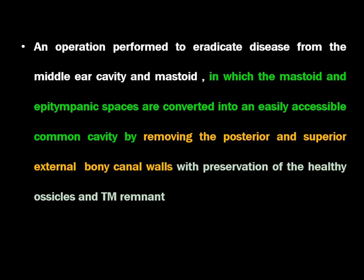Modified radical mastoidectomy, or MRM, is defined as an operation performed to eradicate disease from the middle ear cavity and mastoid, in which the mastoid and epitympanic space are converted into an easily accessible common cavity by removing the posterior and superior bony canal walls, with preservation of healthy ossicles and tympanic membrane remnant. This is modified radical mastoidectomy — one step before radical mastoidectomy surgery.